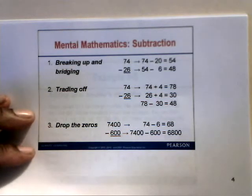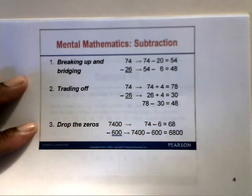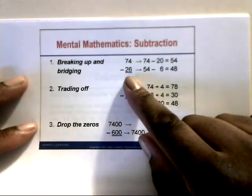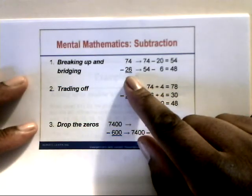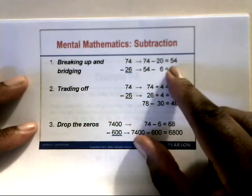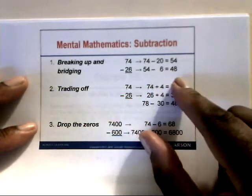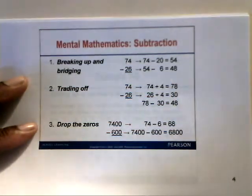For subtracting whole numbers, one mental mathematics technique is breaking up and bridging. For 74 minus 26, we break up 26 as 20 and 6. Subtract 20 from 74, which gives us 54. Then subtract 6 more from 54, you get 48. So 74 minus 26 equals 48.